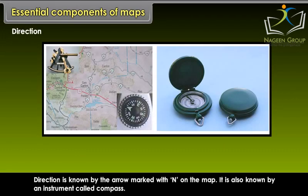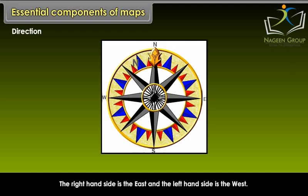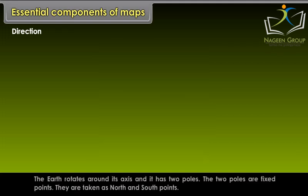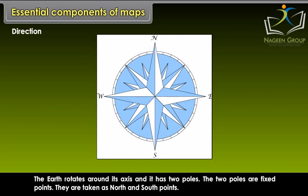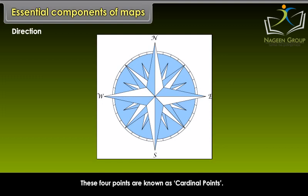Direction is known by the arrow marked with N on the map. The top of the map on which the title of the map is written is always to the north, and the lower part of the map is to the south direction. The right-hand side is the east and the left-hand side is the west. The earth rotates around its axis and it has two poles, which are fixed points taken as north and south points. When you draw a line from north to south pole, the right side of this line is east and the left side is west. These four points are known as cardinal points.